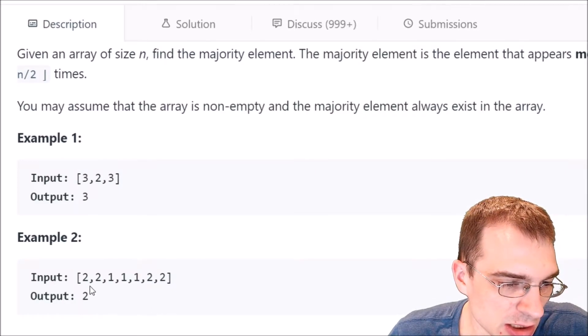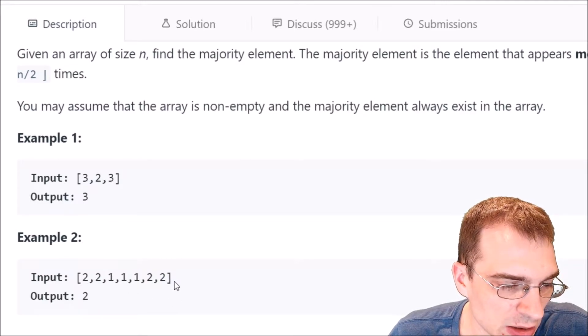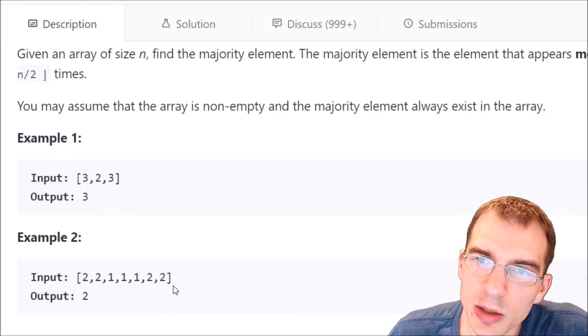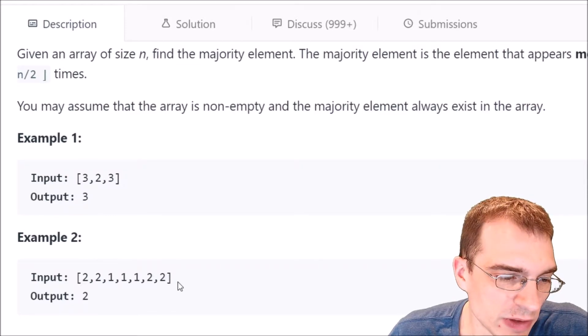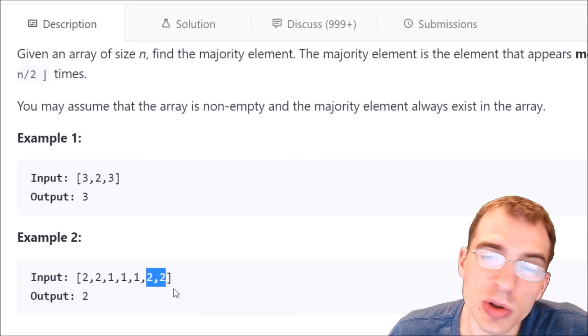And in the second example we have 2, 2, 3 ones and then 2, 2. So in this case we have an array of length 7. And 7 divided by 2, that's 3.5. So we have to find the element that appears more than 3.5 times. And in this case 2 appears 1, 2, 3, 4 times. So that is the majority element in this case.